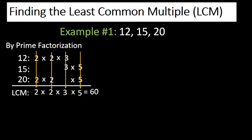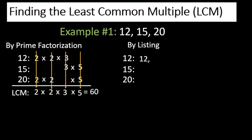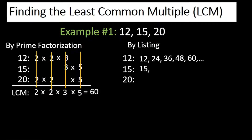Now the next method I'll be showing you is by using the listing method, meaning we're going to list down the multiples of 12, 15, and 20. The multiples of 12 are: 12, 24, 36, 48, 60, and so on. For 15 we have: 15, 30, 45, 60, 75, and so on.